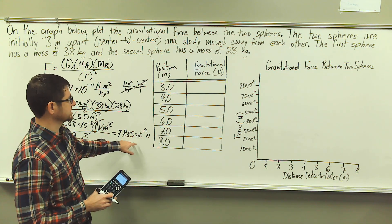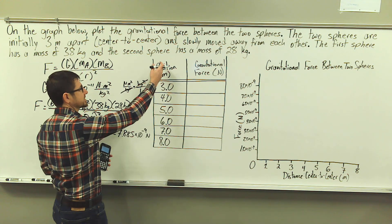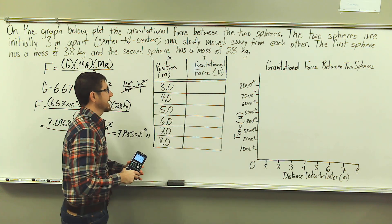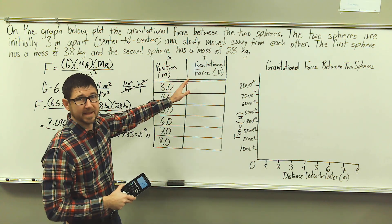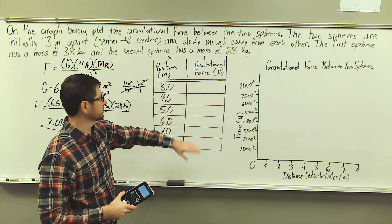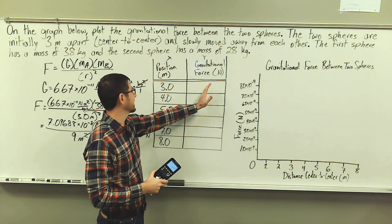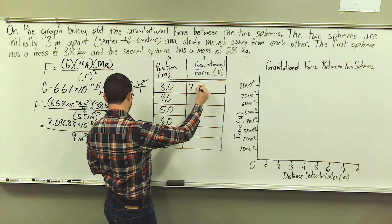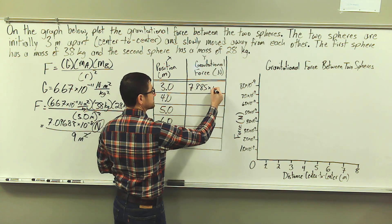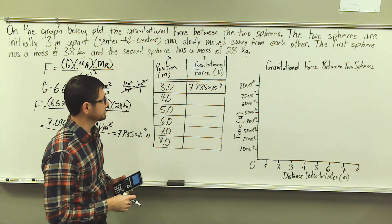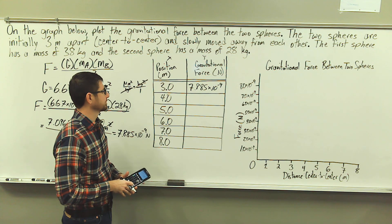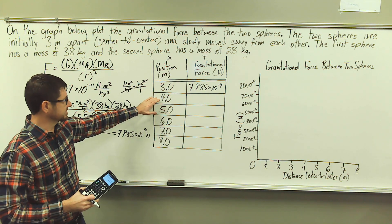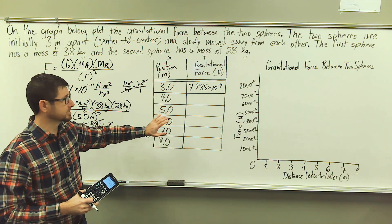So let's transfer this value into our table. This is a t-chart: x in the left-hand column and y in the right-hand column. Our independent variable is the position and our dependent variable is the gravitational force. Our position is 3 meters, and the gravitational force is 7.885 times 10 to the negative ninth newtons. Now we need to calculate the gravitational force of attraction for 4, 5, 6, 7, and 8 meters apart — center-to-center distance.